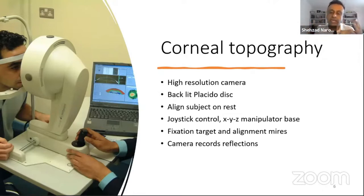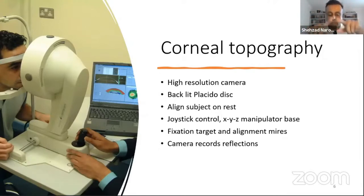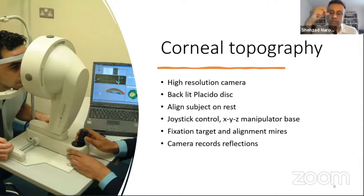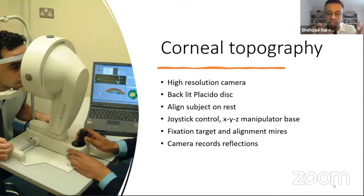Modern corneal topography has a high-resolution camera and a backlit Placido disc. Placido discs have been around for nearly 150 years — Antonio Placido, a Portuguese ophthalmologist, used black-and-white concentric rings with external light shone off the cornea to see how the corneal shape distorted the reflected rings. In modern topography, the patient sits on a chin rest similar to a slit lamp, aligned using an XYZ manipulator, and the camera records how deviated the ring reflections are from where they should be — more deviation indicating steeper or flatter areas.